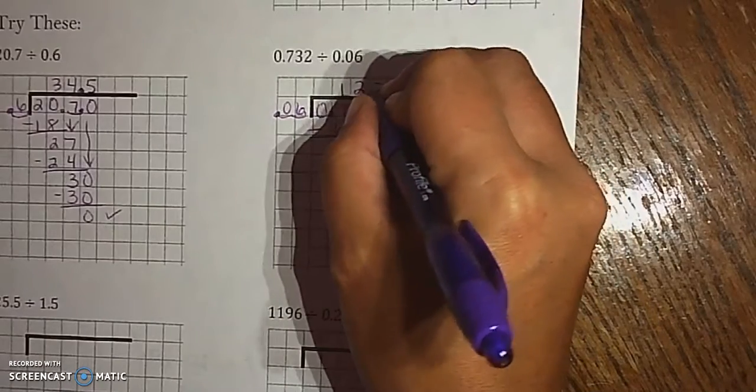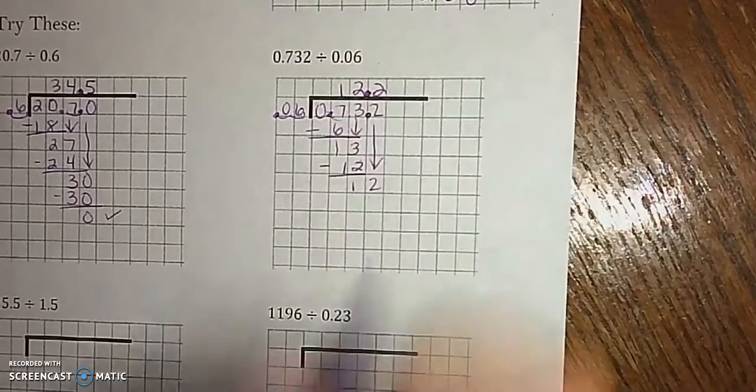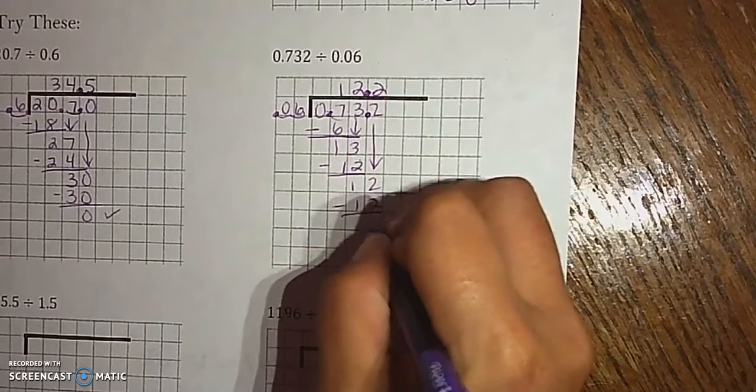There's my decimal, so I'm going to raise the roof. 6 times 2 is 12, which gives me a 0.